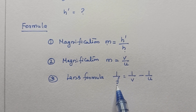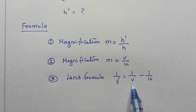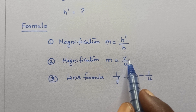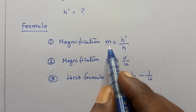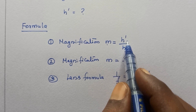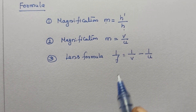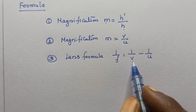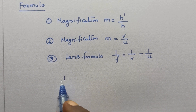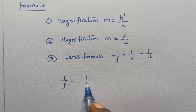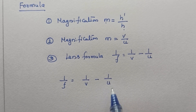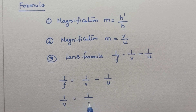Here, f is known and u is known, so we can find v. Using the lens formula: 1 by f equals 1 by v minus 1 by u. Keeping 1 by v on one side, we get 1 by v equals 1 by f plus 1 by u. Substituting the values: 1 by v equals 1 by (minus 15) plus 1 by (minus 10).